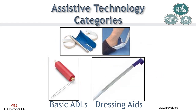Here's another look at some dressing aids. In the picture on the top, you can see the sock aid as it is being used. On the left is a button hook for assisting with threading buttons through the buttonhole with one hand. And on the right is another long-handle shoe horn — this one has a better handle.